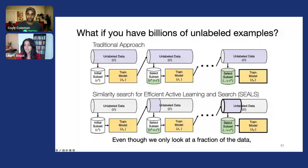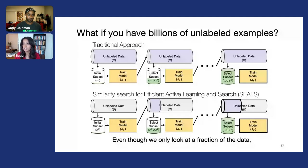Got it, thank you. Related to similarity search, Daniel asked: will a similarity-search-based sampling strategy make it even more difficult to properly learn rare classes in the dataset?